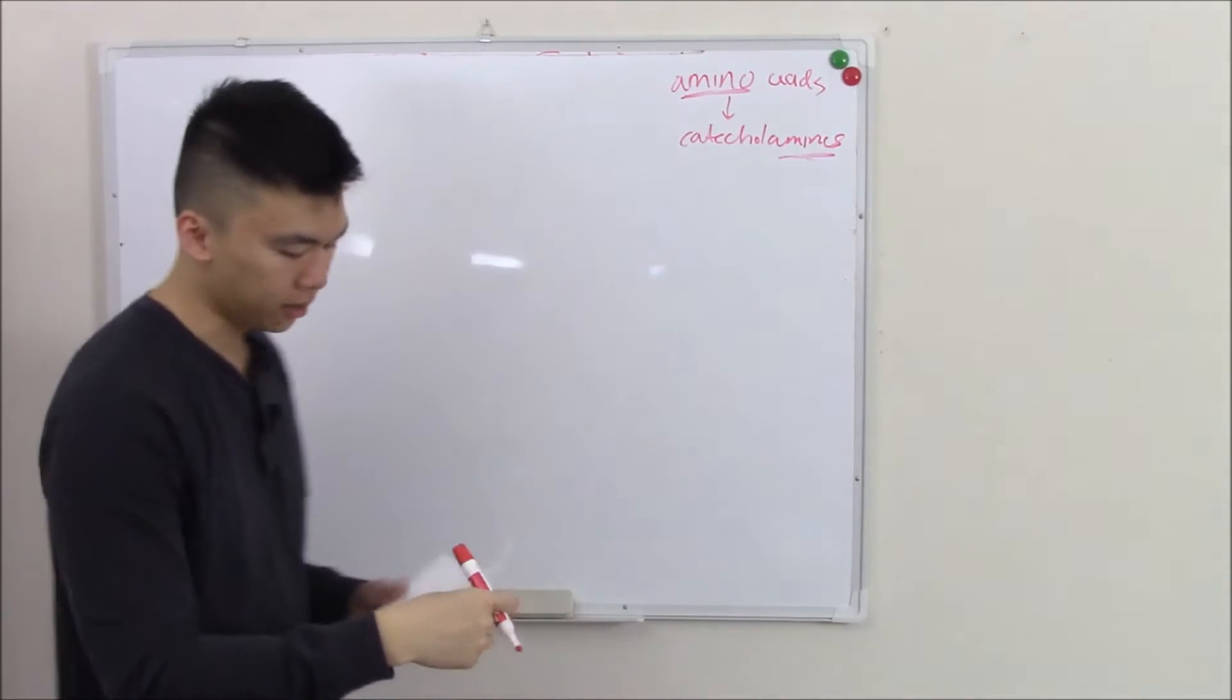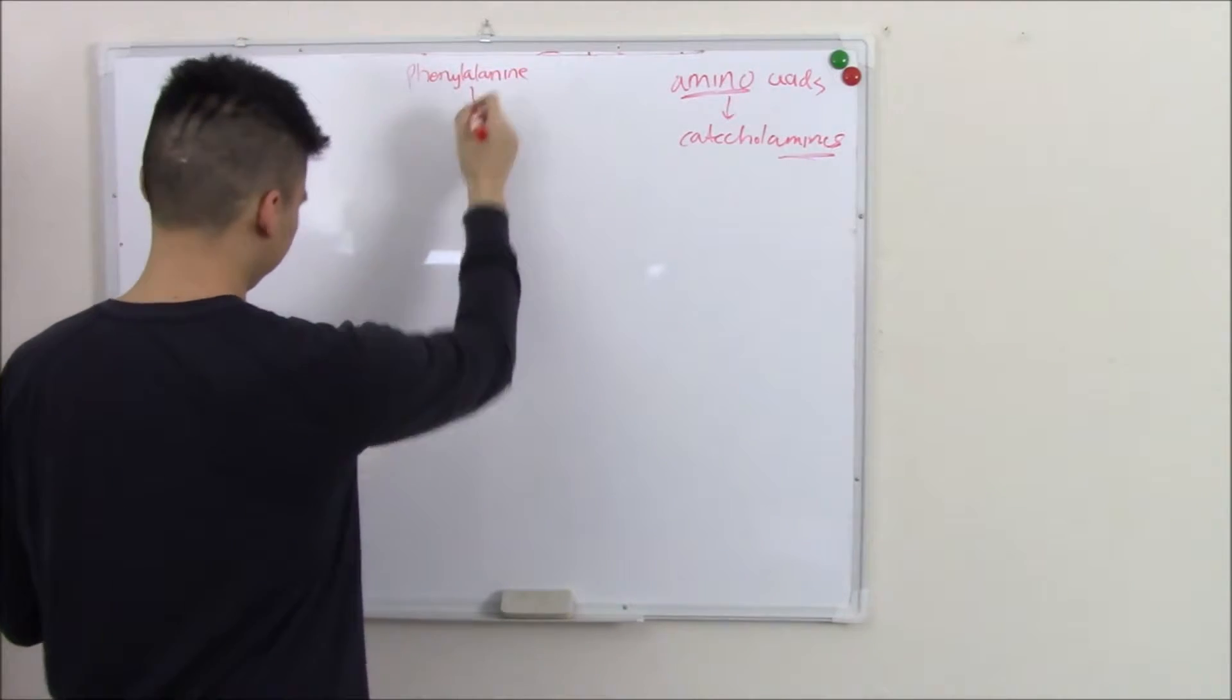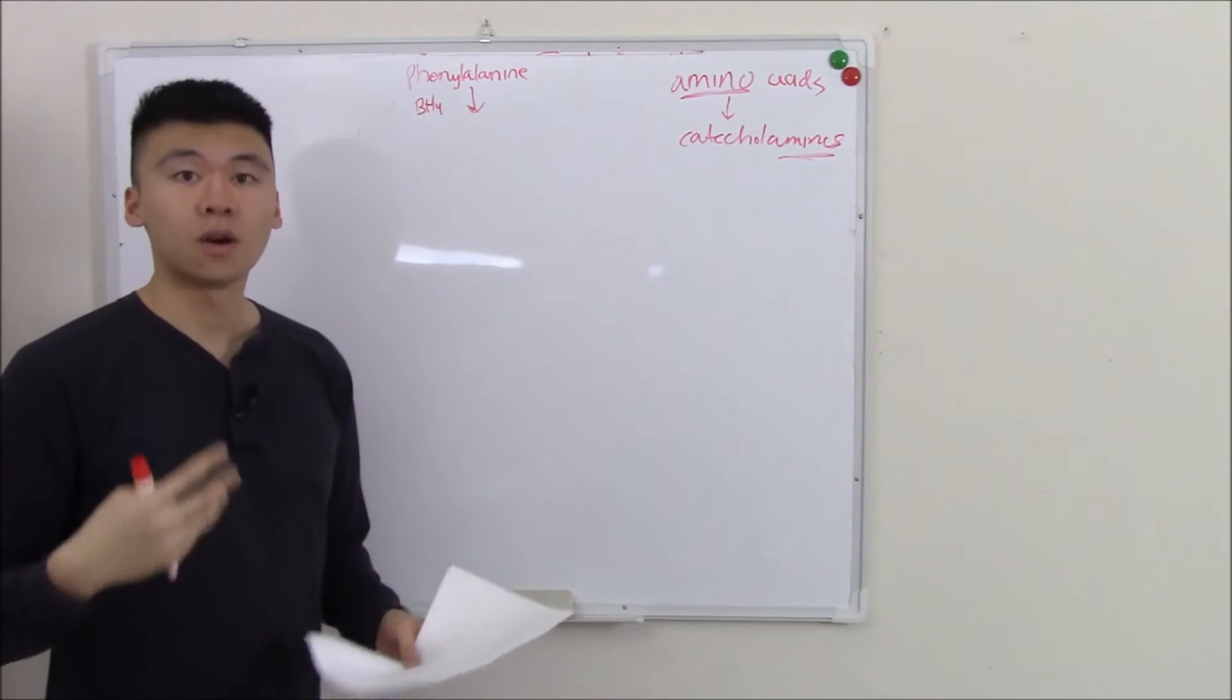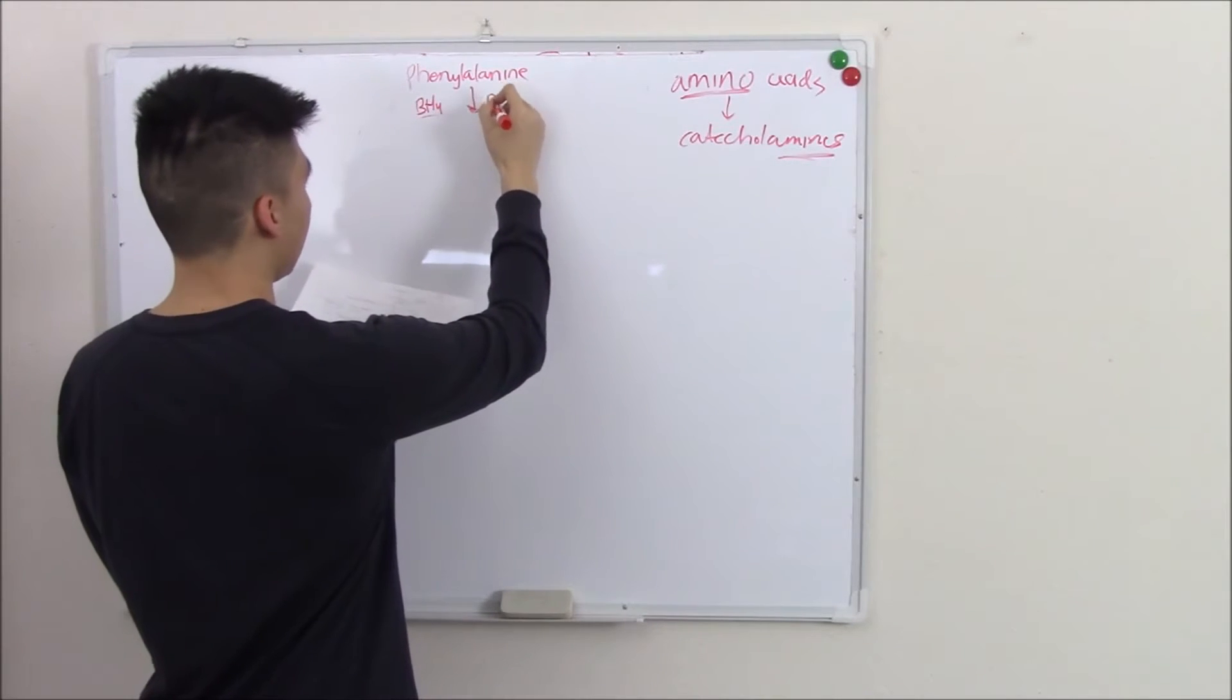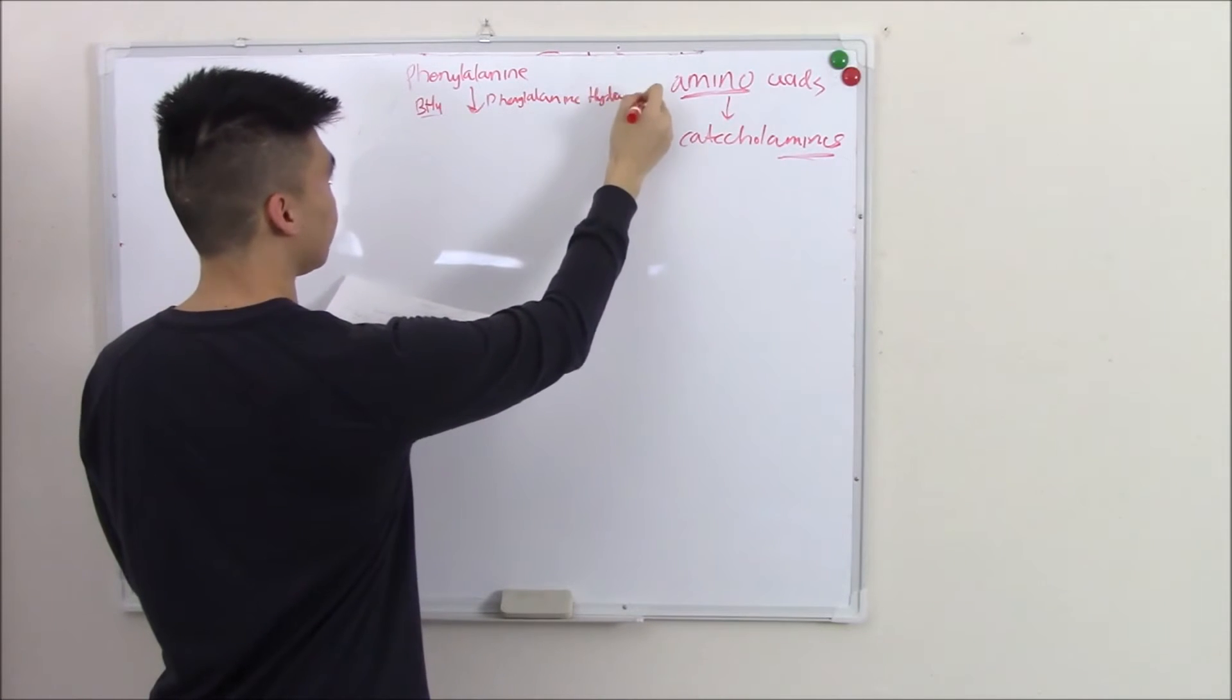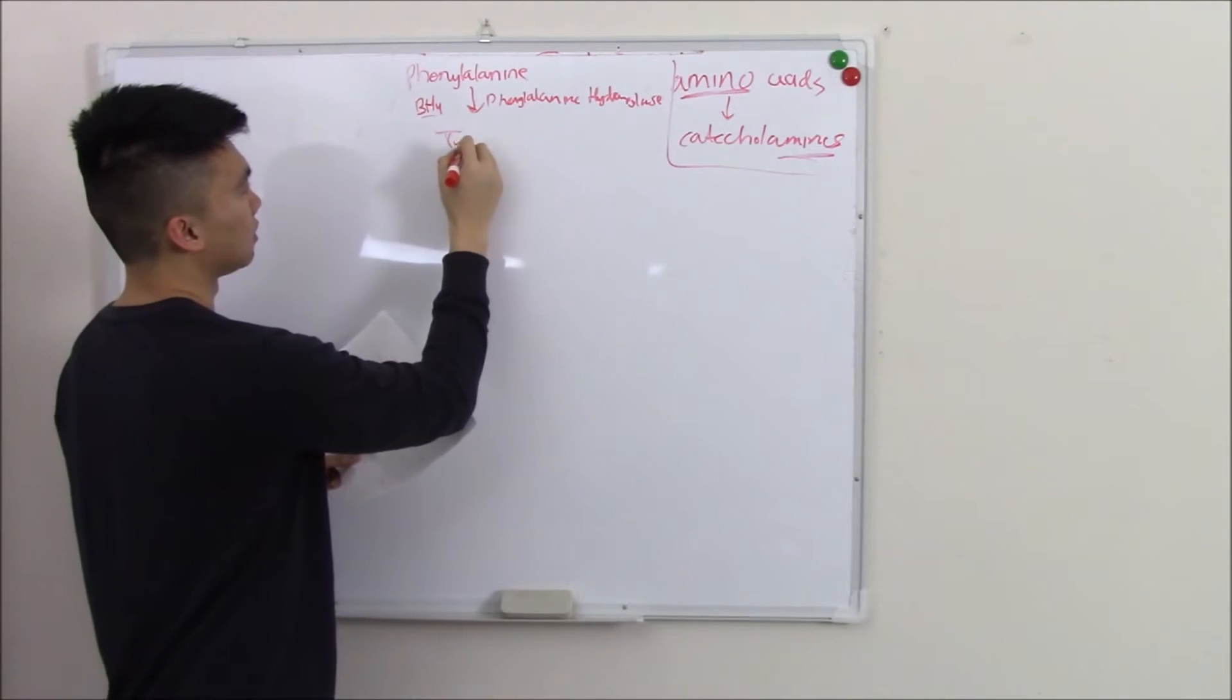We'll start with the amino acid phenylalanine. So phenylalanine with the help of BH4 or tetrahydrobiopterin and the enzyme phenylalanine hydroxylase becomes tyrosine.